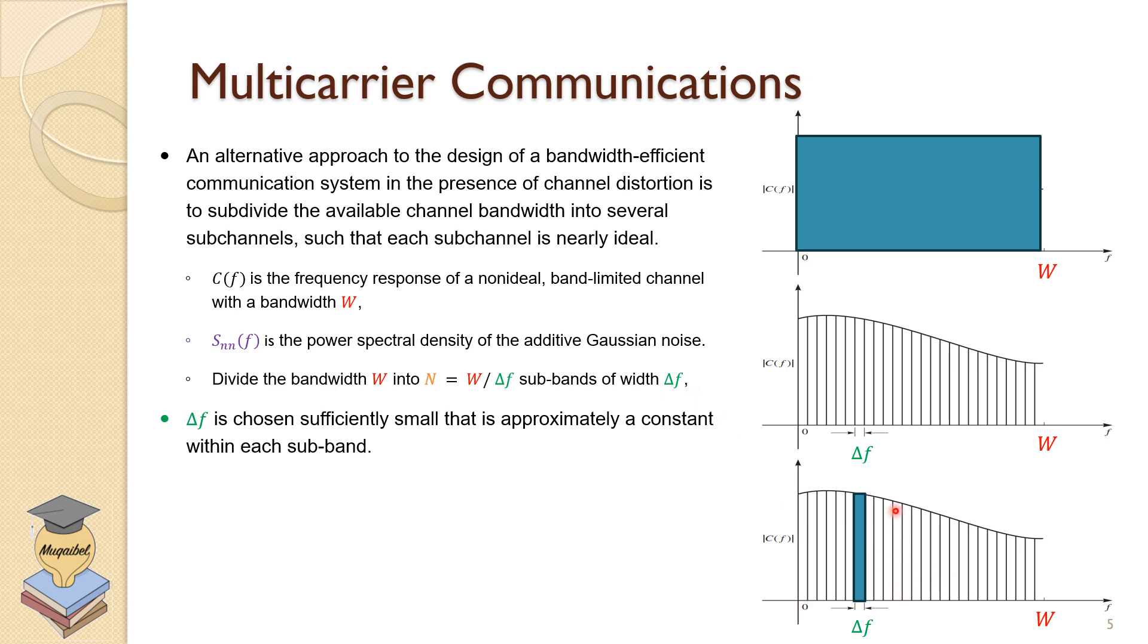Delta F is chosen sufficiently small. So there's a question somebody would say, how many divisions should we have? We should make sure that the spectrum within the subdivision looks almost flat. I cannot take from here, for example, as one division because there is a clear variation unless my system is not sensitive. So delta F is chosen sufficiently small. That is approximately a constant within each sub-band when it comes to the magnitude spectrum.